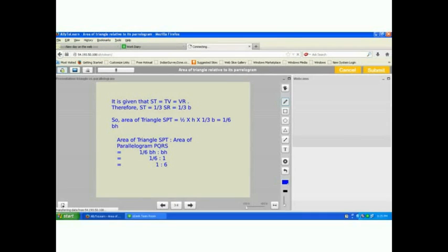According to the formula, area of the triangle SPT is equal to half into H, and in place of base, I write one-third of B. Multiplying all of them, I am getting one-sixth BH.